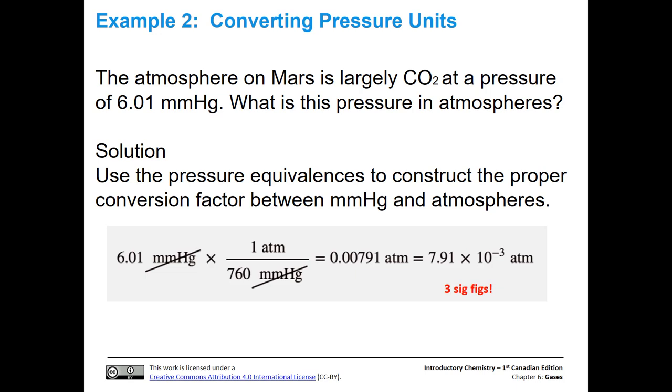Okay, so we're going to use the pressure equivalencies we already have. This time, we're going to choose millimeters of mercury and atmospheres instead of torr and atmosphere. We're starting off with 6.01 millimeters of mercury, so we need to put millimeters of mercury in our conversion factor in the denominator so they cancel out. Then we put one atmosphere on top. When we do the math, 6.01 divided by 760, we get 0.00791 atmospheres.